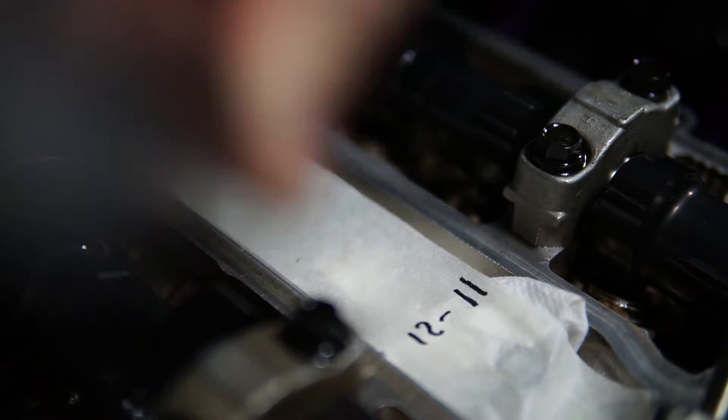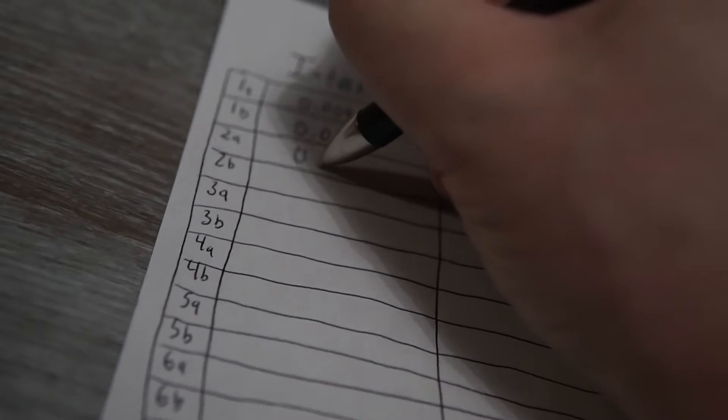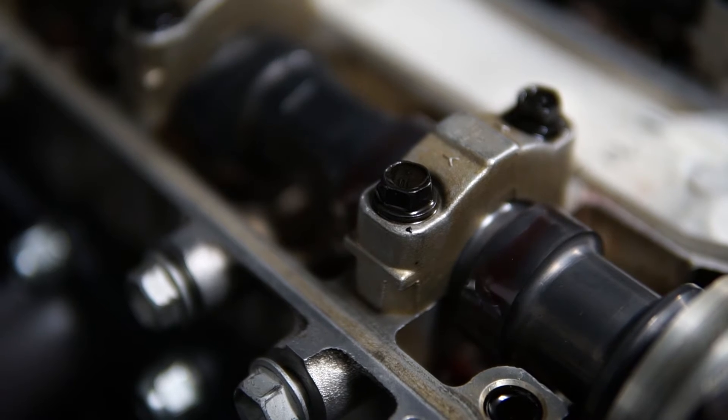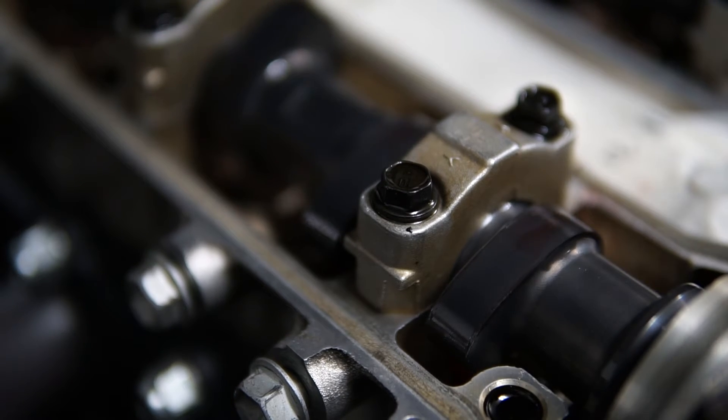For each valve location, you need to record the clearance measured with the feeler gauge. Once all locations are measured, you'll use this information to determine if any adjustments are needed.